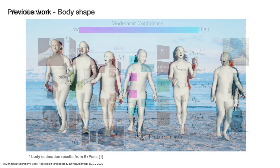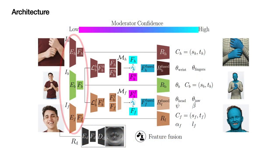Our method, PIXI, solves these problems by introducing a moderator. PIXI first uses encoders to extract features from cropped images of the body, face, and hands.